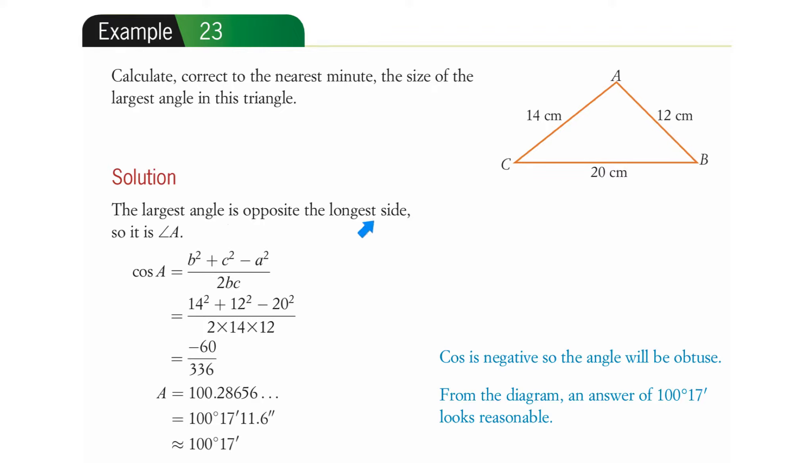The largest angle is opposite the longest side, and that's angle A. And that's now what we're looking for. And so it's an included angle between those two sides. So keep that in mind as we put things in the formula.